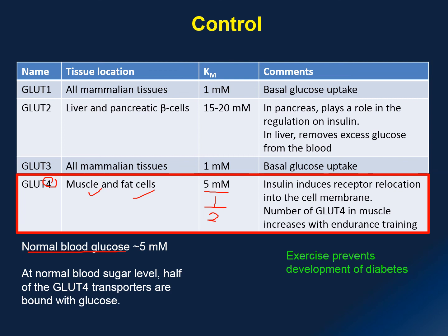Latest research suggests that we can increase the quantity of GLUT4 transporters through endurance exercise such as running, swimming, and cycling. So if you are an athlete, your training is not just for building more muscle, but also for the biochemical setup in your body. Studies also show that exercise can prevent diabetes, because it increases the quantity of GLUT4 transporters and therefore your body can respond to insulin better by importing glucose into both muscle and fat cells.